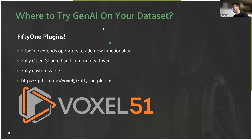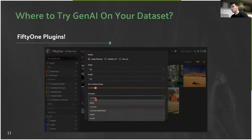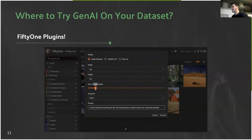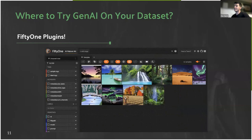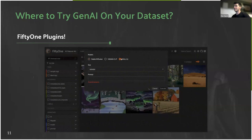FiftyOne plugins are a great way to start applying this to your datasets. There are different operators and functionality you can add to FiftyOne using these gen AI models for segmentation, finding, cleaning, and curating your dataset. It's fully open source, community driven, and fully customizable. We even have a gen AI plugin today made by community member Jacob, where you can do stable diffusion and the DALL-E 2 model to generate sample pictures to add to your dataset. We have tons of cool ones planned for augmenting datasets and applying new operators.